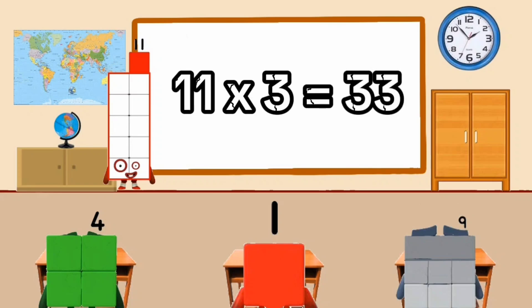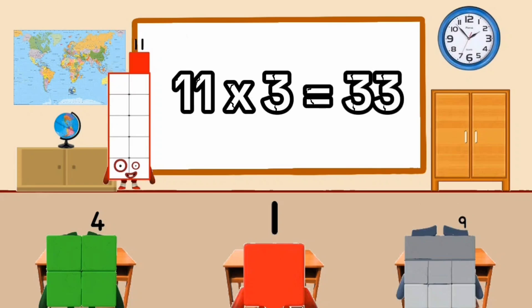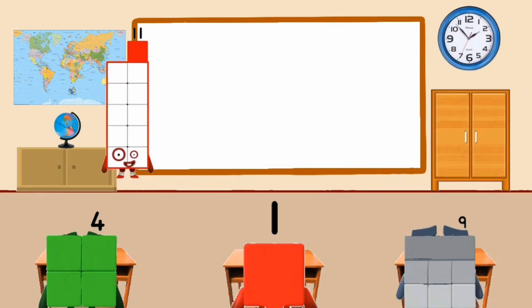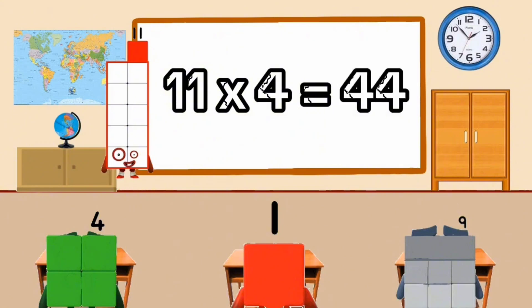11 times 3 equal 33. 11 times 4 equal 44.